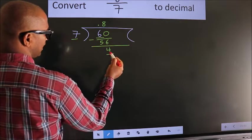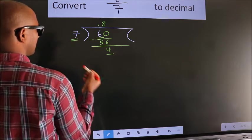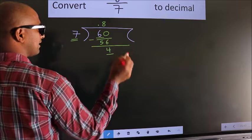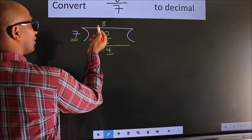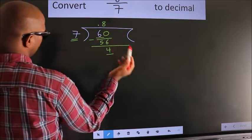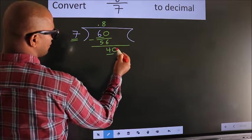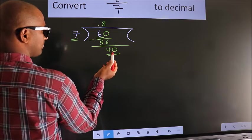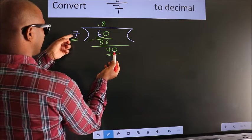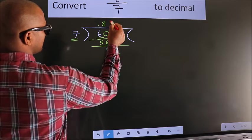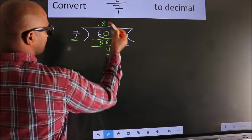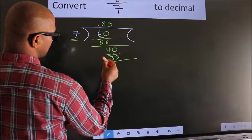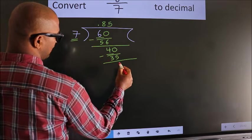Here we have 4, here 7. 4 is smaller than 7. And we already have the decimal, so we can directly take 0. So 40. A number close to 40 in the 7 table is 7 fives, 35. Now we subtract. We get 5.